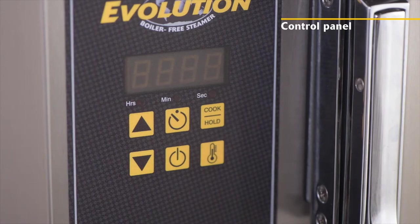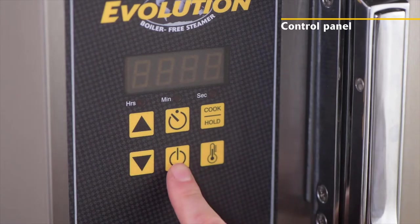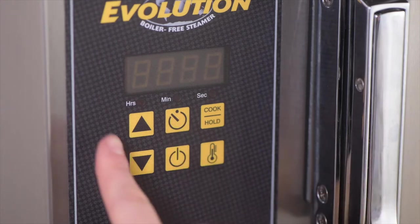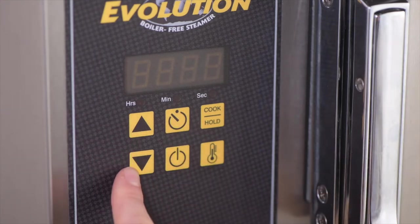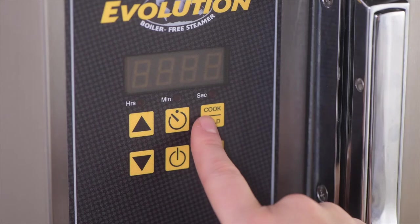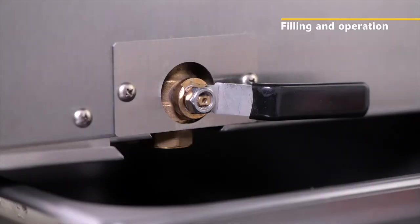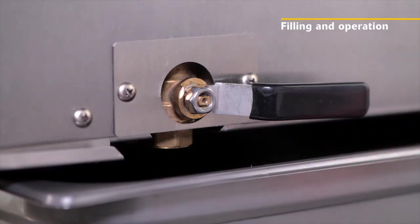Your Evolution steamer control panel features six buttons: power on/off, timer start button, time up or down buttons, cook or hold mode button, and cavity temperature button. For connectionless models, ensure the drain pan is in place and drain valve is closed.